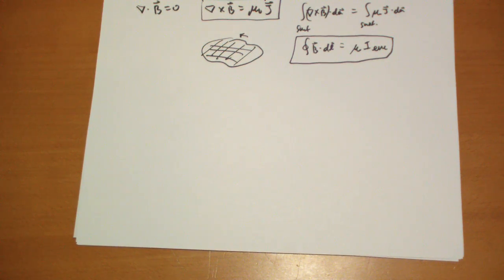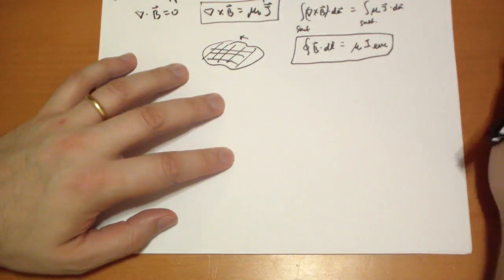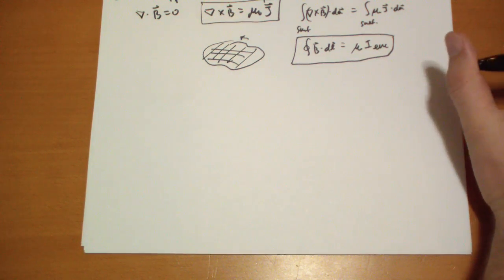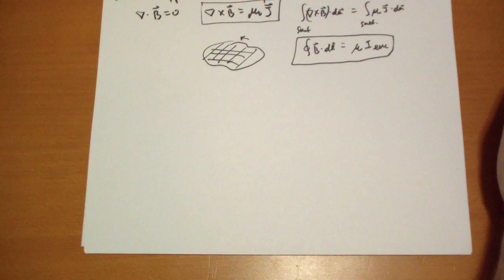The interesting thing is that Gauss's law looks very similar. It's kinda funny how you start with Coulomb's law and you end up with Gauss's law. And, in magnetostatics, you start with Biot-Savart's law and you end up with Ampere's law.